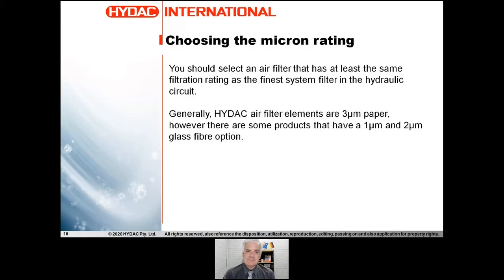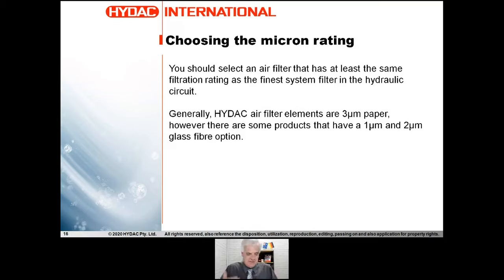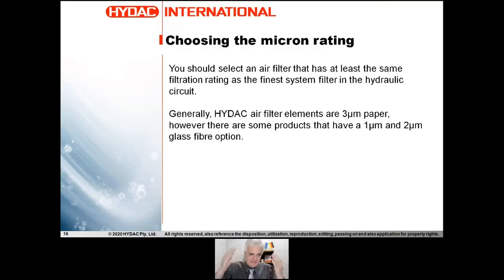You should select an air filter that has at least the same filtration rating as the finest system filters in the hydraulic circuit. For example, if you have 10-micron filtration, it doesn't make sense to have 25-micron breathers or even 10-micron breathers. In many systems the smallest micron rating will often be on the air breather if it's applied correctly.